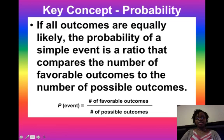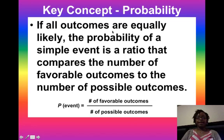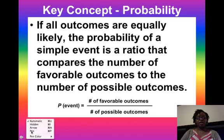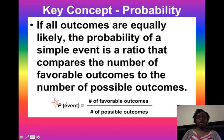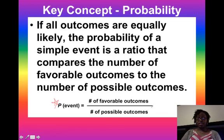Our key concept here is probability. If all outcomes are equally likely — that's theoretical probability — in theory, what would happen with no chances for variability. The probability of a simple event is a ratio that compares the number of favorable outcomes to the number of possible outcomes. Write down this formula: it compares the number of favorable outcomes, meaning whatever you want to happen, to the number of possible outcomes. Pause here to get that formula into your notes.